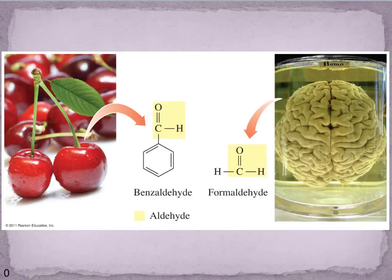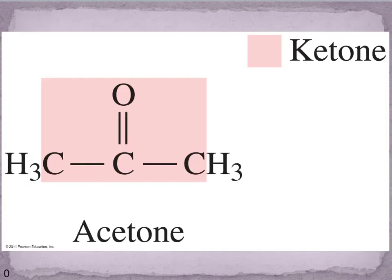We see aldehydes all around us: formaldehyde is used as a preservative, and benzaldehyde is found in cherries. There are many different aldehydes in many different substances. We'll talk about how these appear in carbohydrates and what difference their structural features make in how these molecules are used in the body.